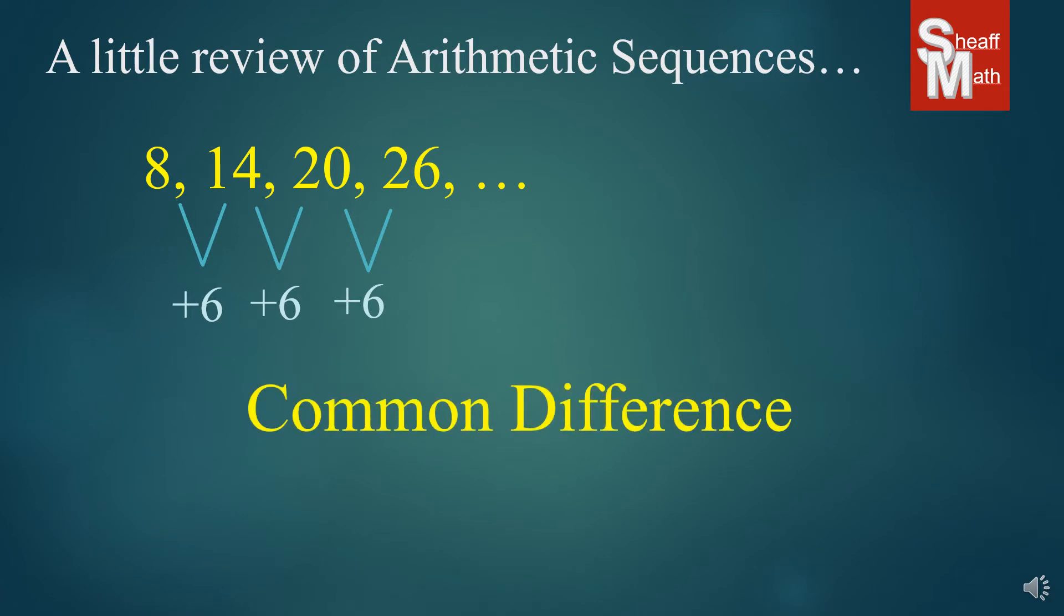Now, why do we call it the common difference? Because you can actually take any number in this sequence and subtract it by the one before it. So, 14 minus 8, that makes 6. 20 minus 14, that makes 6. 26 minus 20, that makes 6.